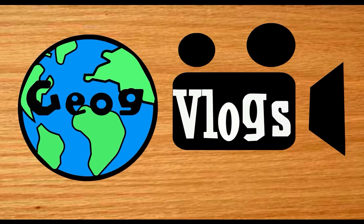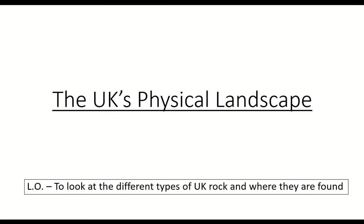Hello and welcome to the UK's Changing Landscapes topic. This is the very first session, found on Paper 1, Topic 1. To begin with, we're going to start by looking at the UK's physical landscape. This is the very first of three sections you'll need to study for this topic, and there are three sections on the exam paper. The second section looks at coastal landscapes of the UK and the third looks at river landscapes of the UK.